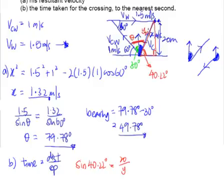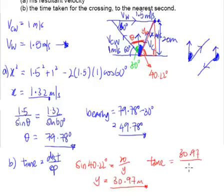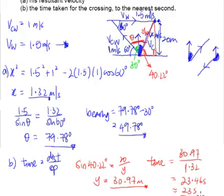Cross-multiplying from the calculator, you get Y = 30.97 meters. This distance represents the actual distance you are traveling. To find the actual time: time = 30.97 ÷ 1.32 = 23.46 seconds. Rounded to the nearest second, the answer is 23 seconds.